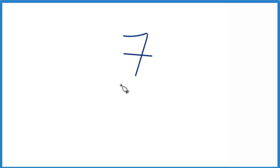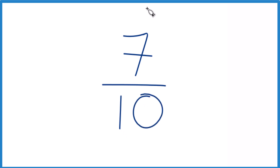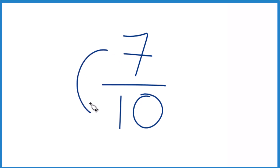Here's how you find the reciprocal for 7 tenths. To find the reciprocal for 7 tenths, or really any number, you take the numerator on top, you move that to the bottom, and the denominator you move to the top.